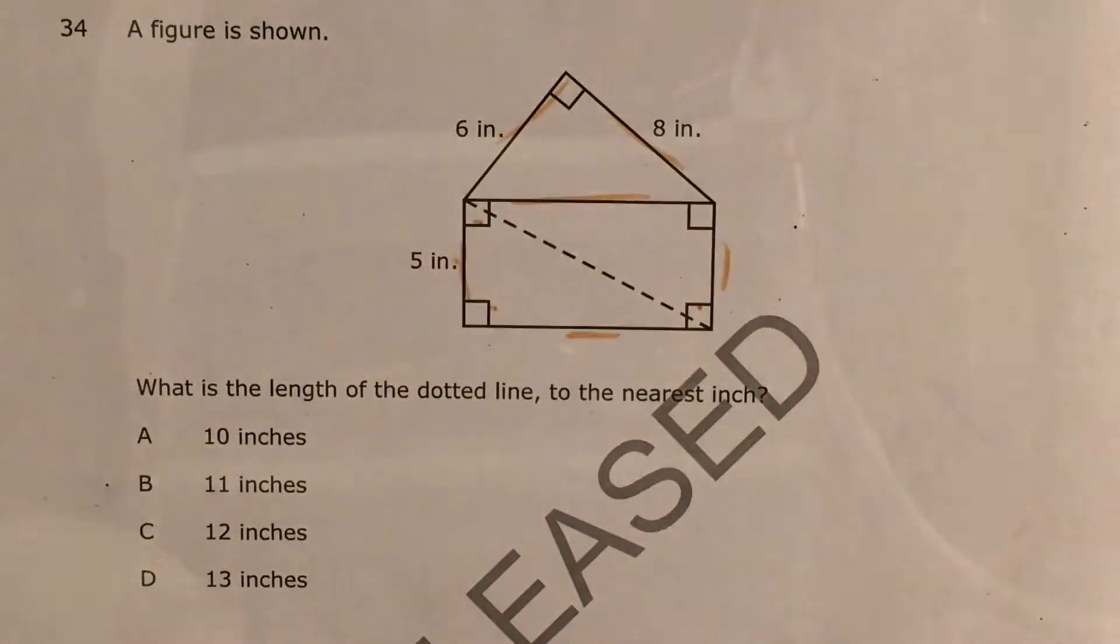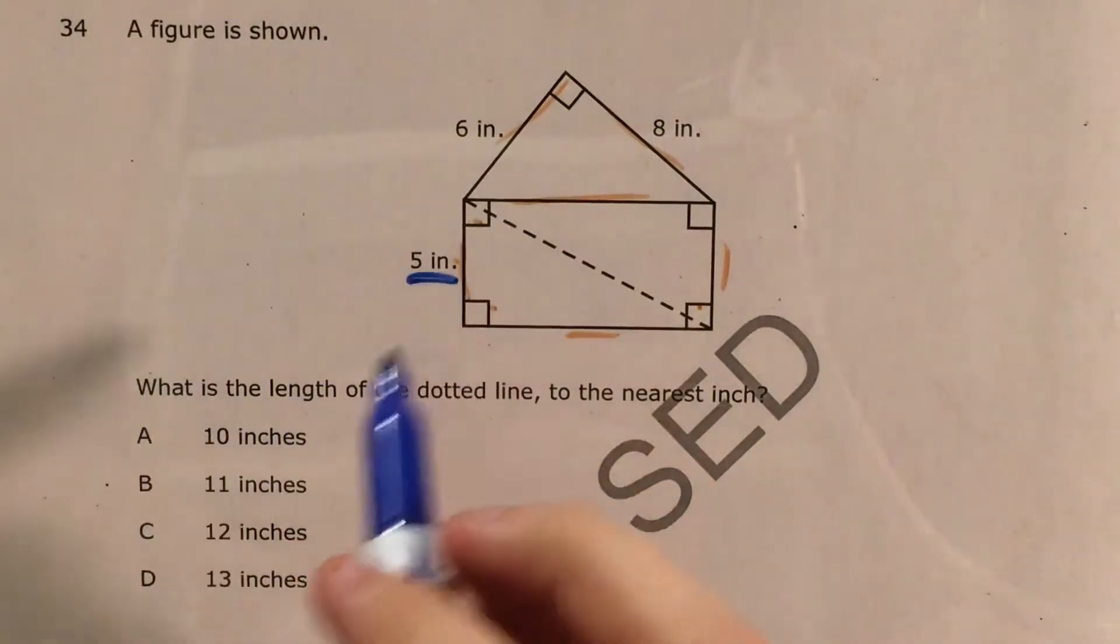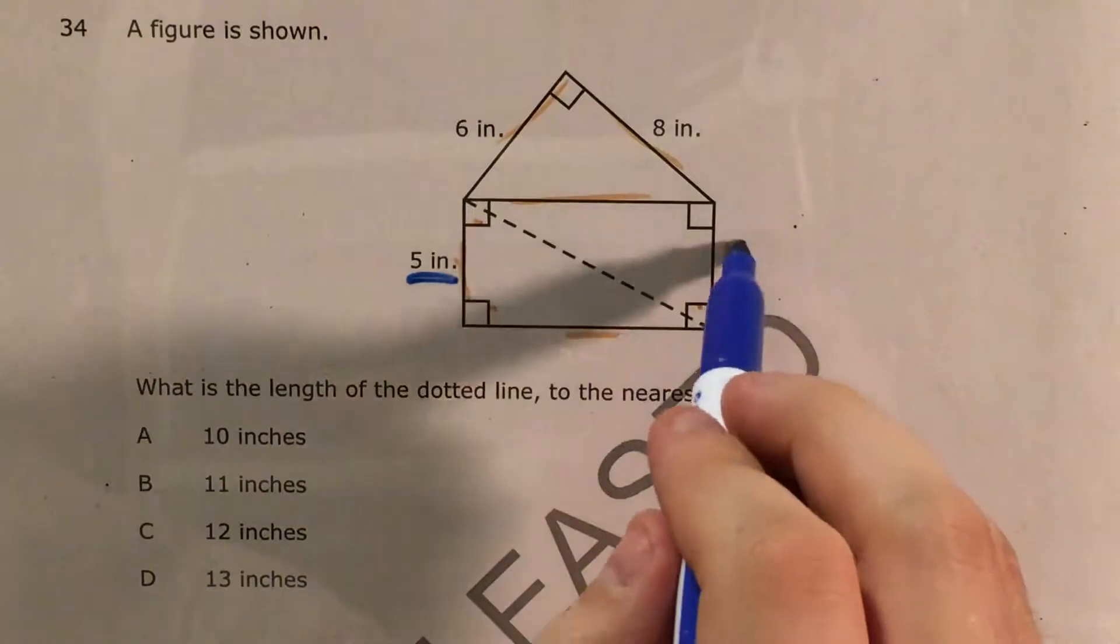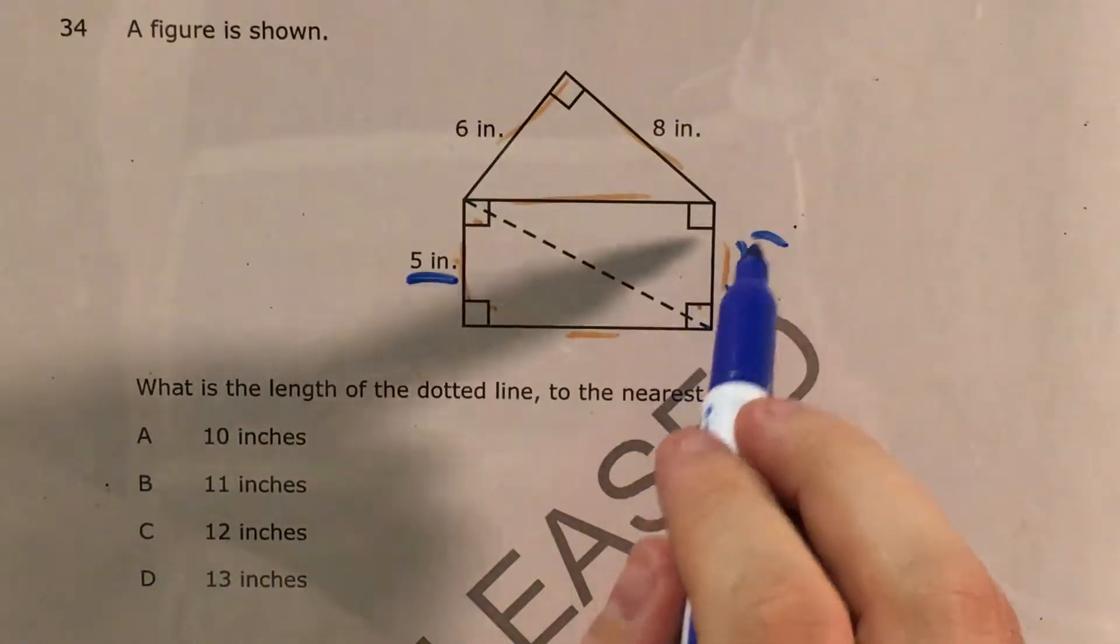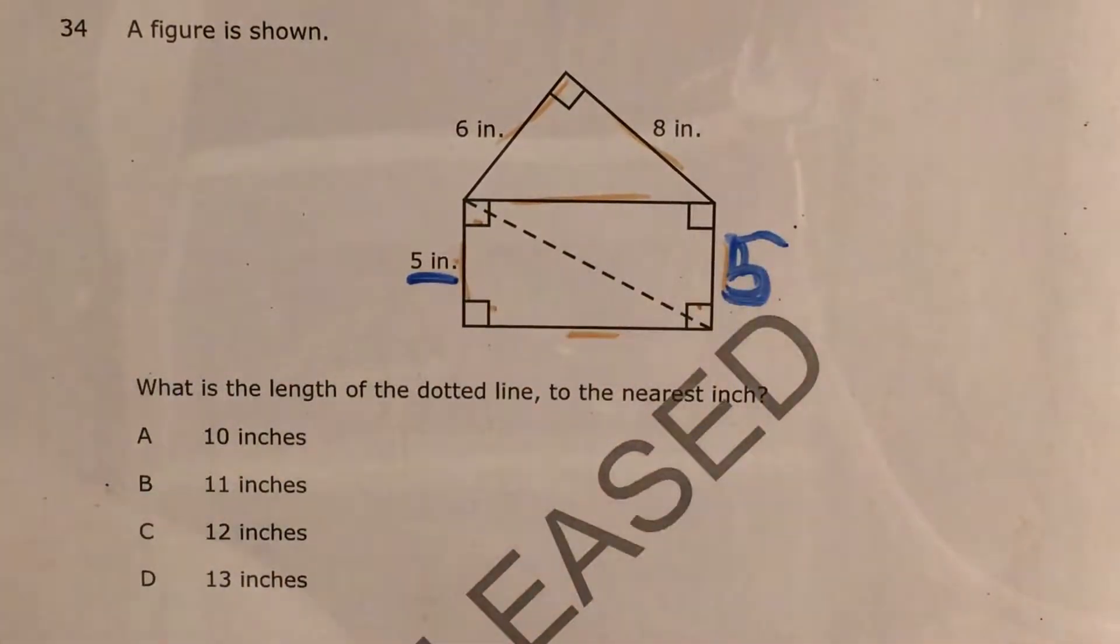And I will use the property of rectangles that opposite sides are congruent and say that if this side is 5 inches, this side also has to be 5 inches. Now that's not a 15. I know it might look a little bit like a 15, but it's a 5. Just the number is written in blue.